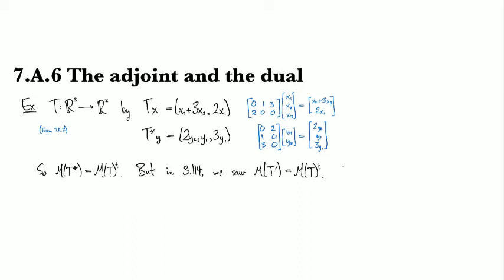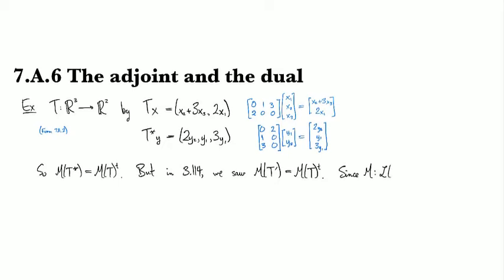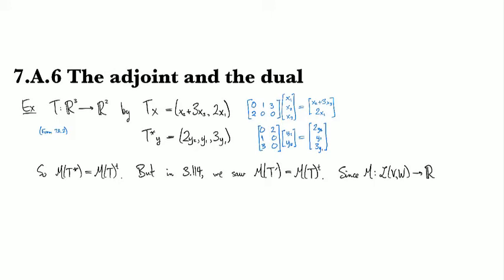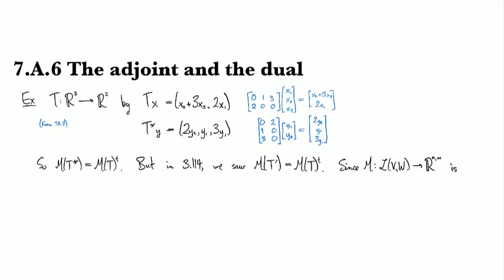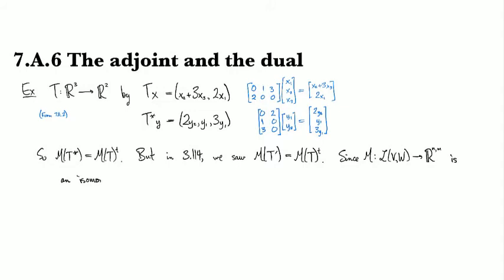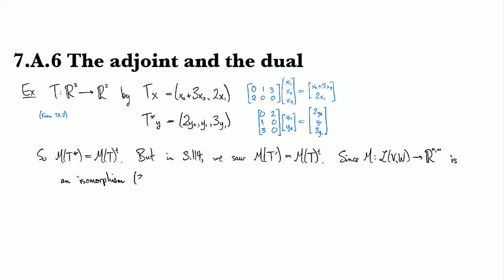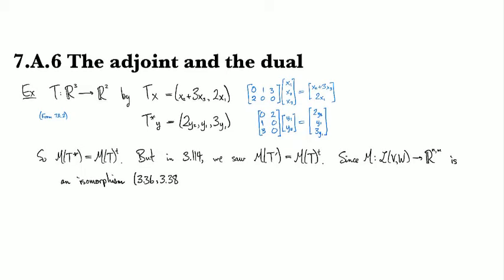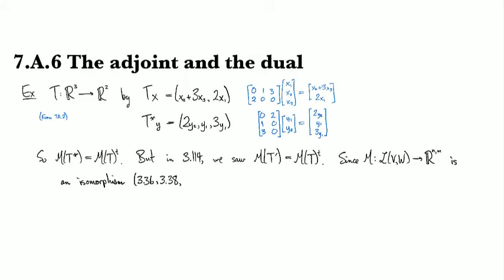Let's sort this out. We know that M as a linear map from the space of linear maps to the collection of matrices, this n by m matrices, this is an isomorphism. That's the content of 336 and 338 proving it's a linear mapping. And then the isomorphism part comes by the dimension calculation in 340.